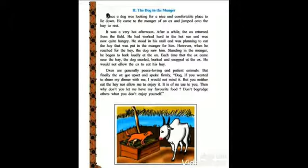Oxen are generally peace-loving and patient animals. But finally the ox got upset and spoke firmly. Dog, if you wanted to share my dinner with me, I would not mind it. But you neither eat the hay nor allow me to enjoy it. It is of no use to you. Then why don't you let me have my favorite food? Don't begrudge others what you don't enjoy yourself.